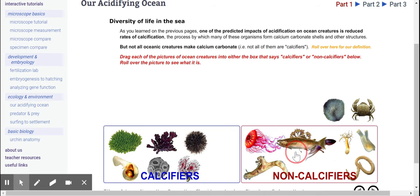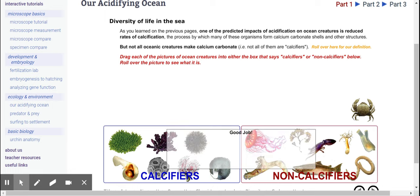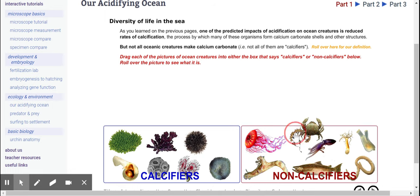Fish, non-calcifier. Moss animal, calcifier. And a crab, calcifier.